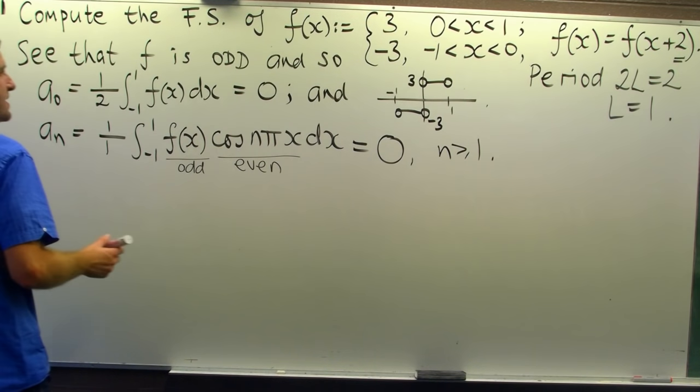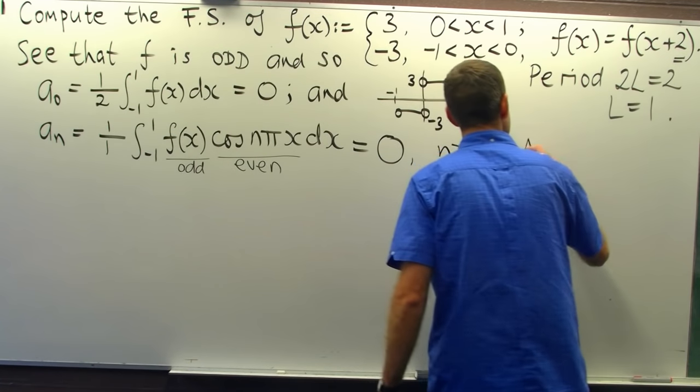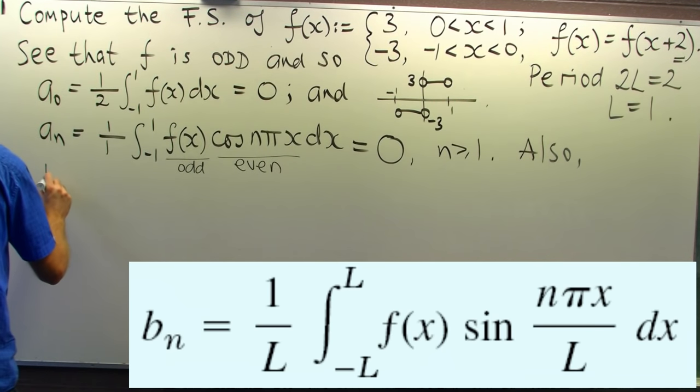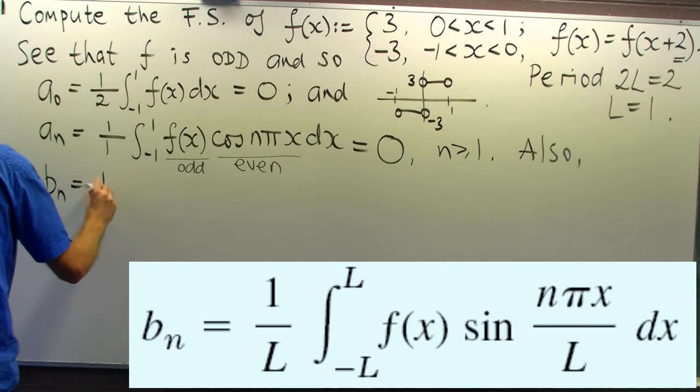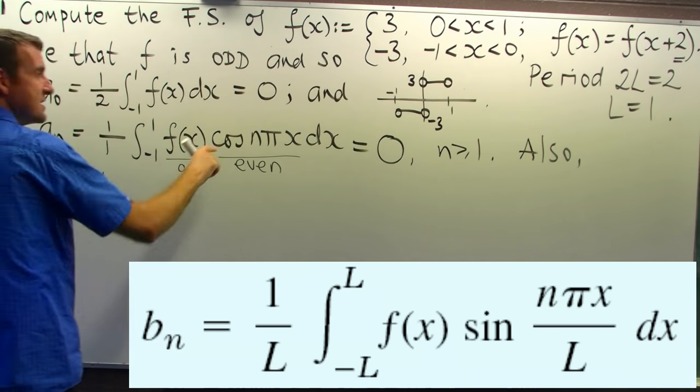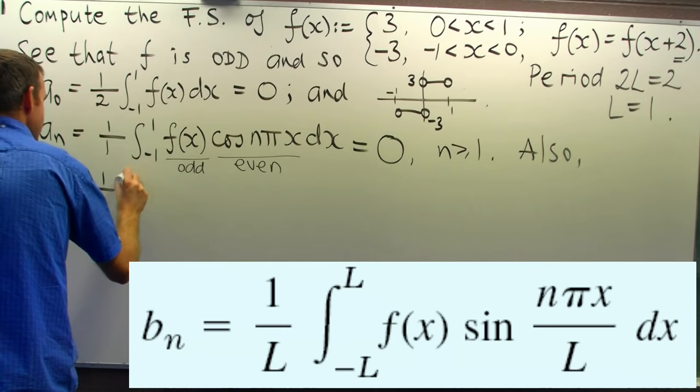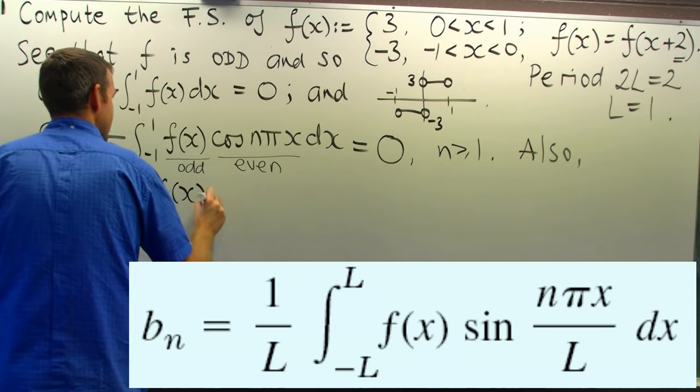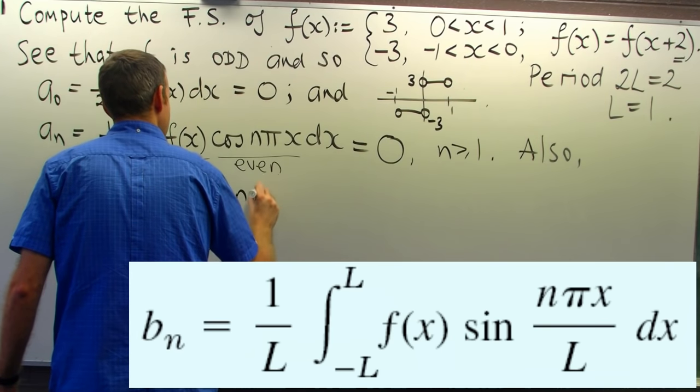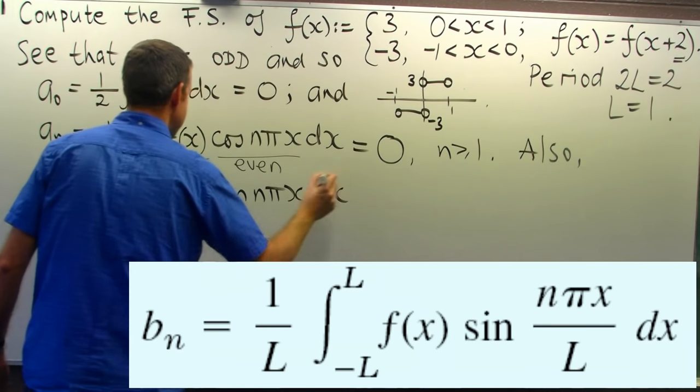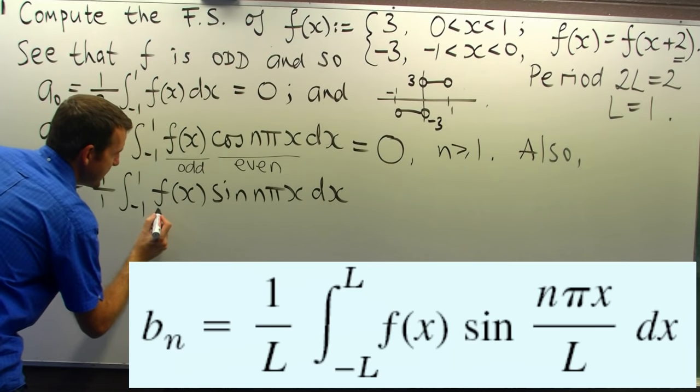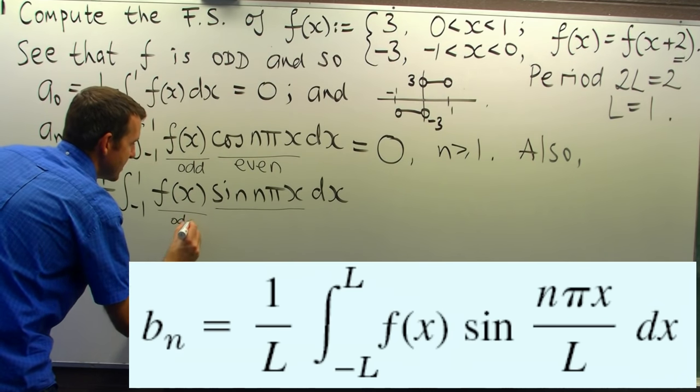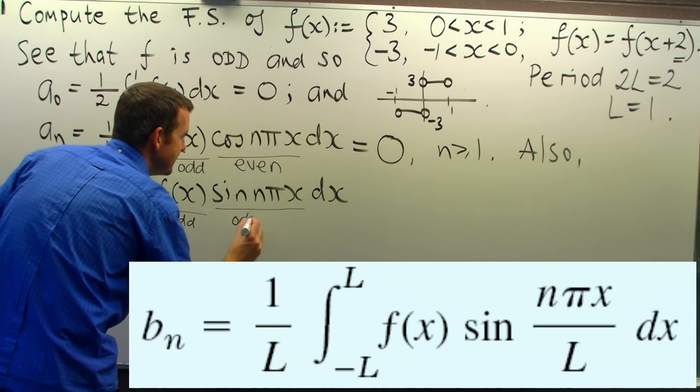What about the b sub n? Well, b sub n is similar to this but you replace cosine with sine. So where does that take us? Well, we've got an odd function times an odd function. The product is an even function.